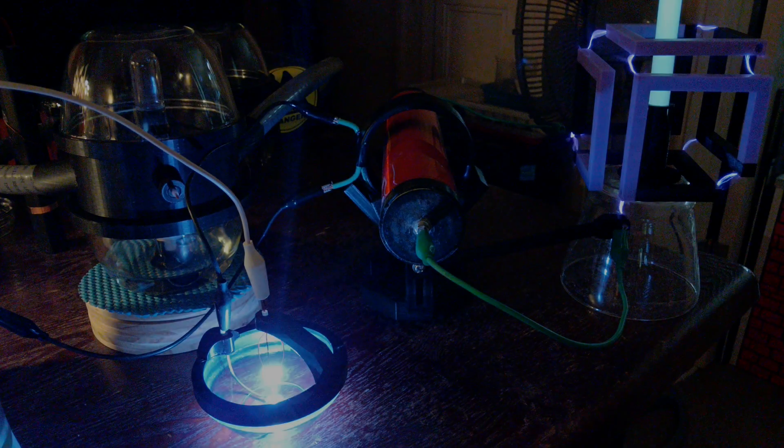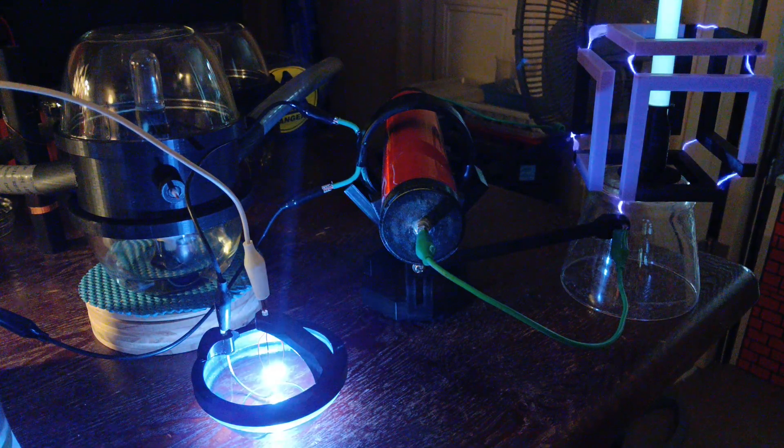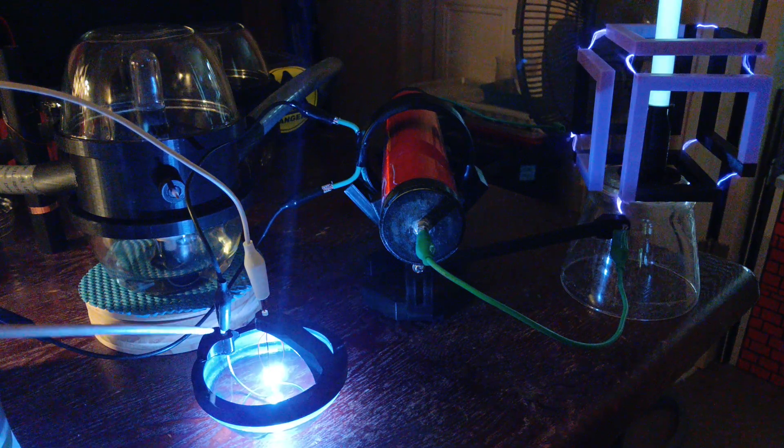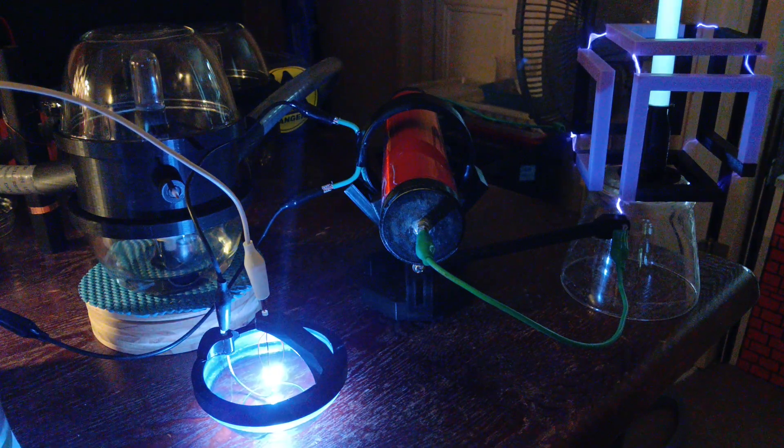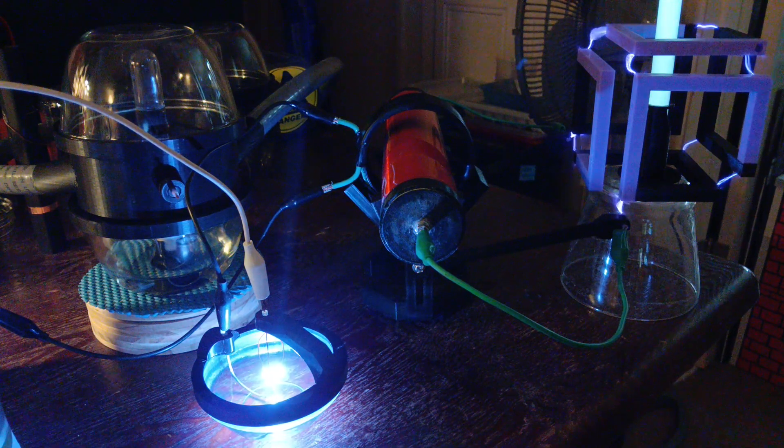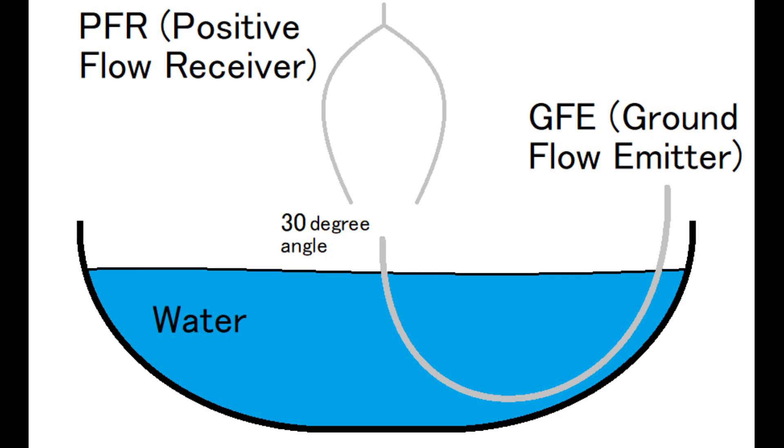A water cooled Spark Gap is comprised of three main parts: the PFR positive, the GFE negative, and a non-conductive insulated water reservoir. With only three components, you can create the most amazing Spark Gap in history.